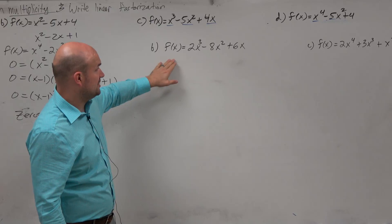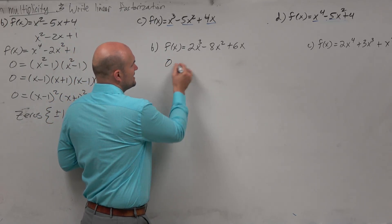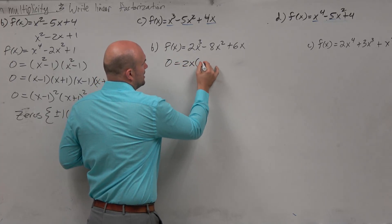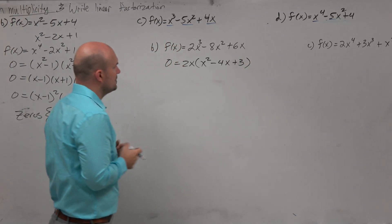So in this example here, can we see that they have a common factor? Right? So let's factor out a 2 and an x. So I factor that out, and I'm left with x squared minus 4x plus 3.